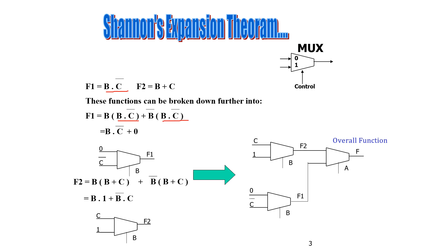Now, B times B times C̄ simplifies to BC̄. B̄ times B in the whole term becomes 0. So this multiplexer can be implemented for this function F1. B is the control sequence. If B is 1, the input is C̄. If B is 0, the input is 0.